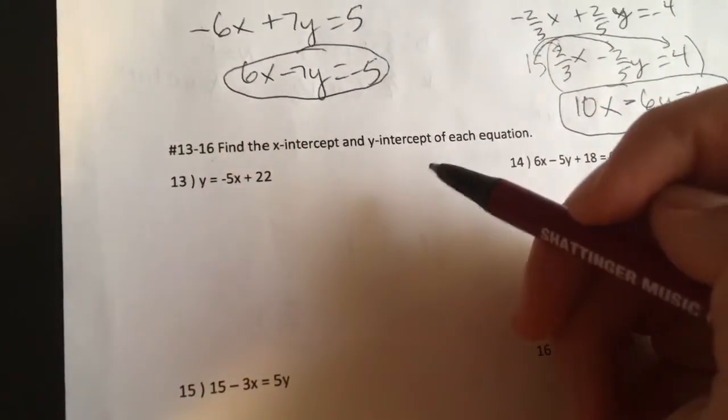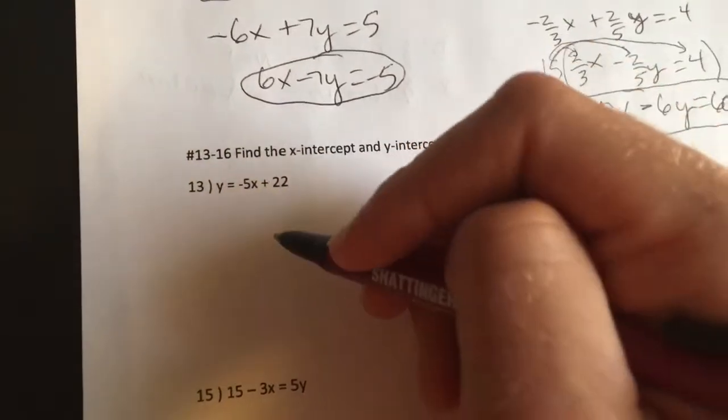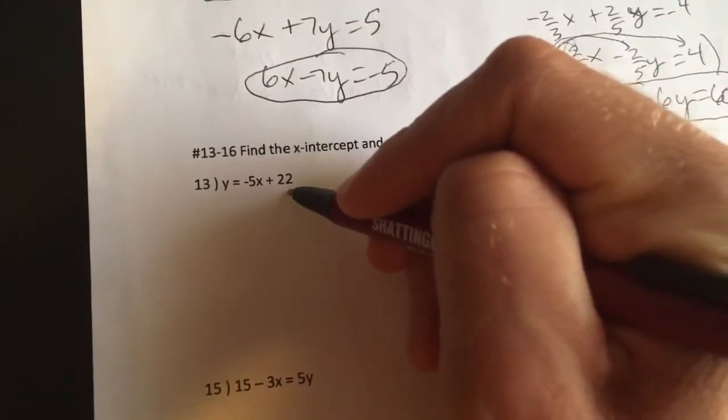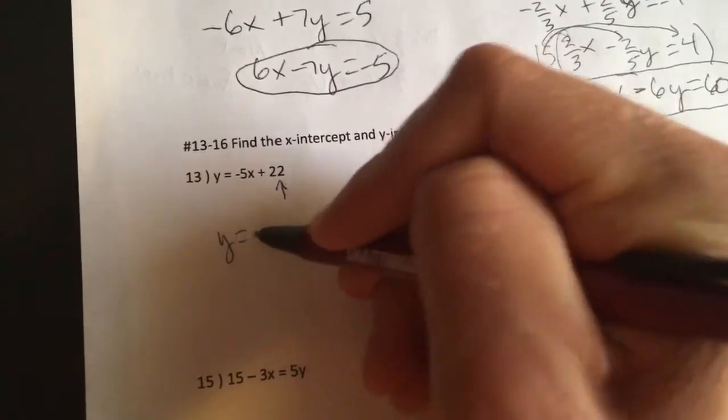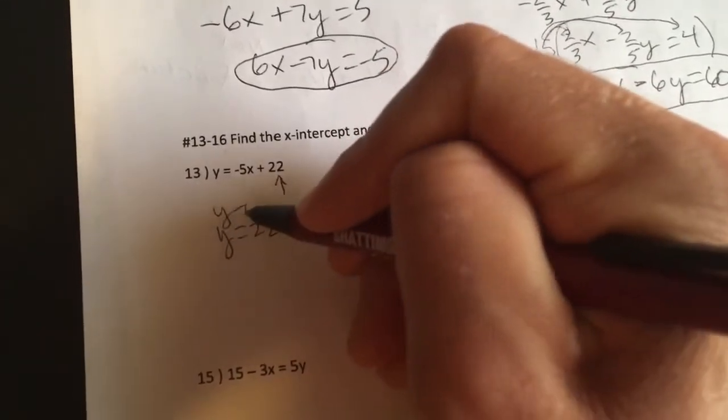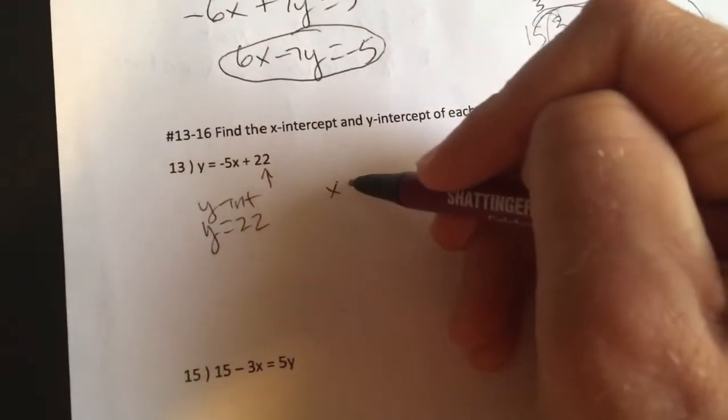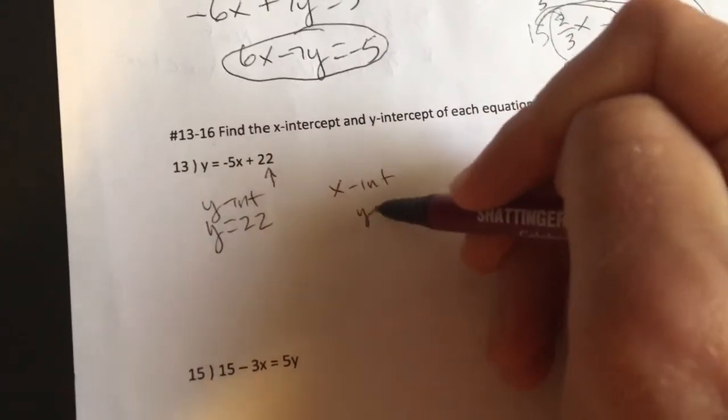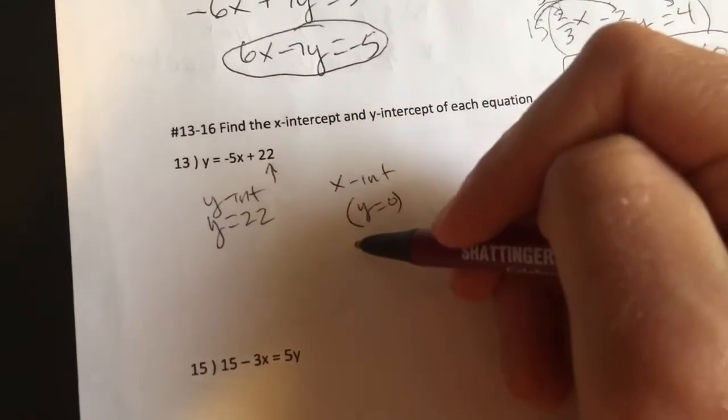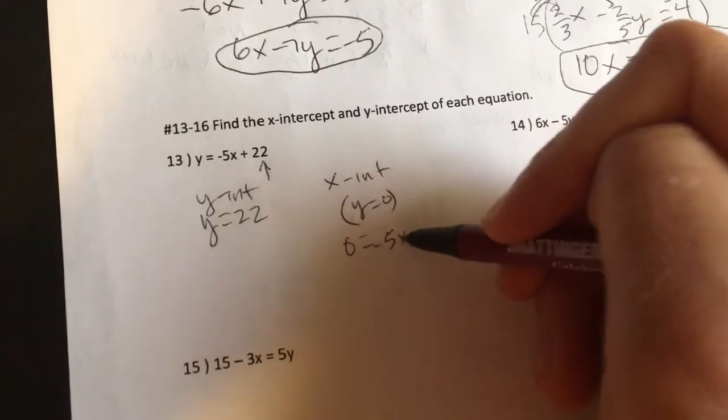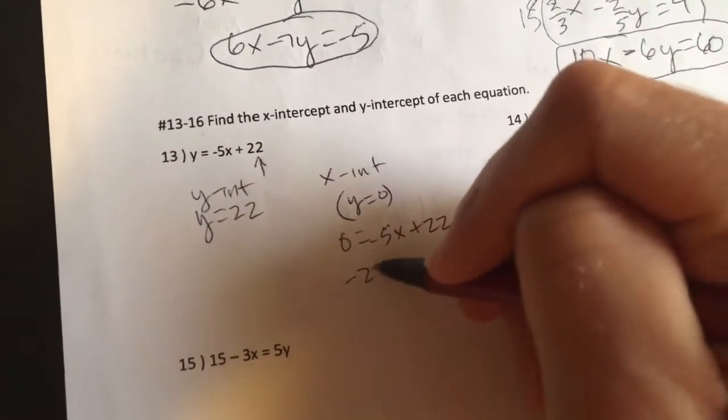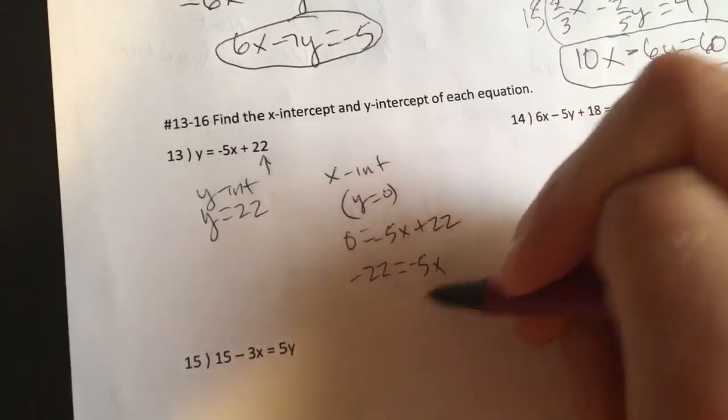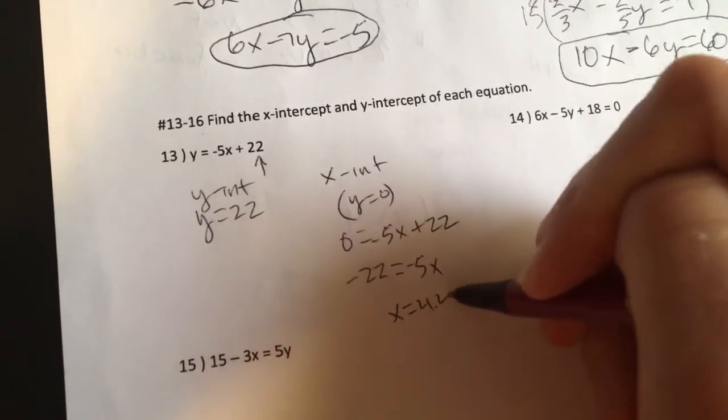Find the x-intercept and y-intercept of each equation. All right, guys. The y-intercept, this is y equals mx plus b. Slope intercept form. The y-intercept is when x is 0, so it's simply y is 22. Now, the x-intercept is when y equals 0. So, instead of saying y equals negative 5x plus 22, I'm going to say 0 equals negative 5x plus 22. Subtract 22 from both sides and divide by 5.